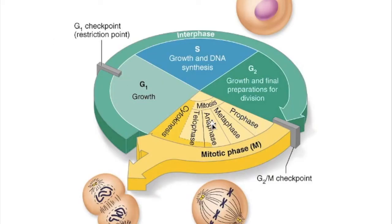Mitosis, as shown in this picture, has four phases: prophase, metaphase, anaphase, and telophase. This is the process of nuclear division.